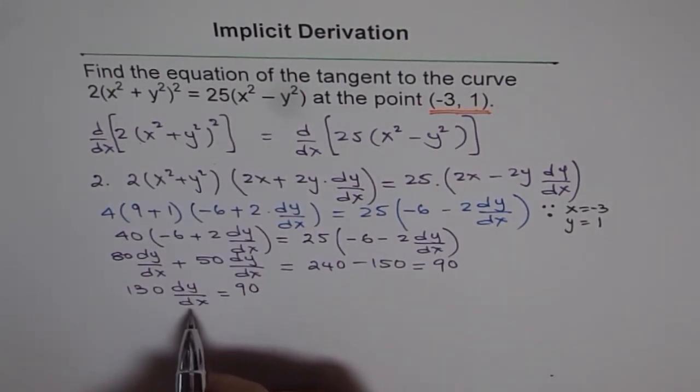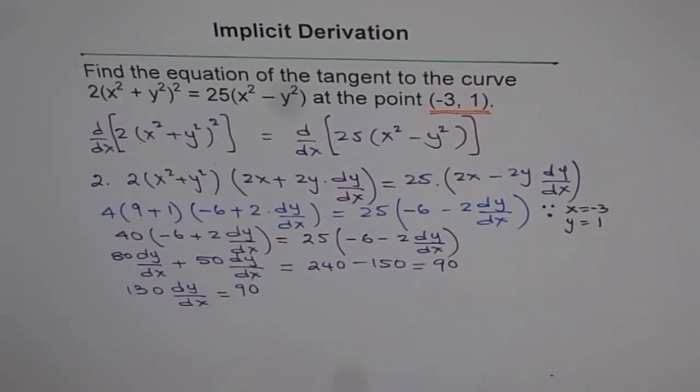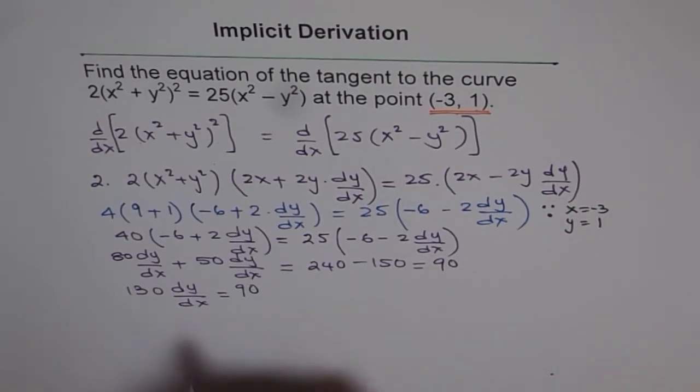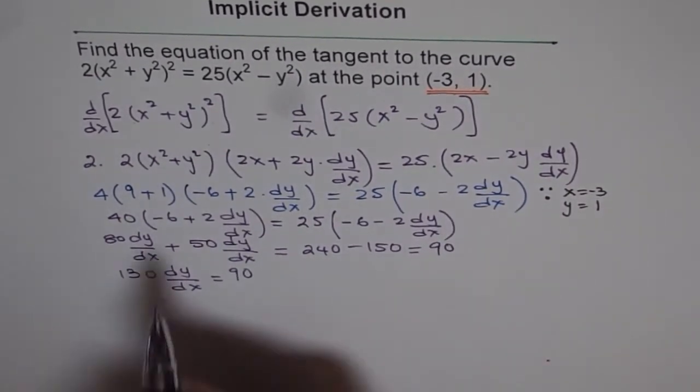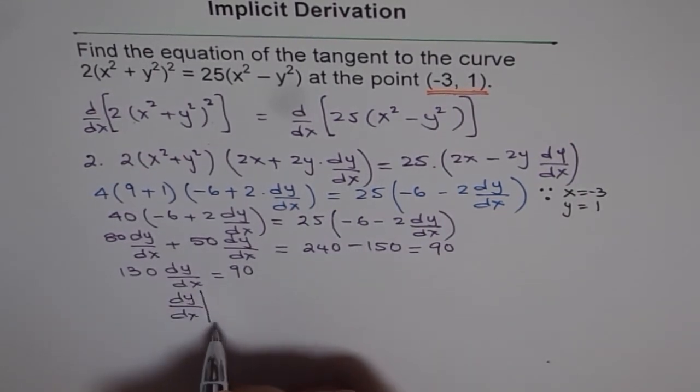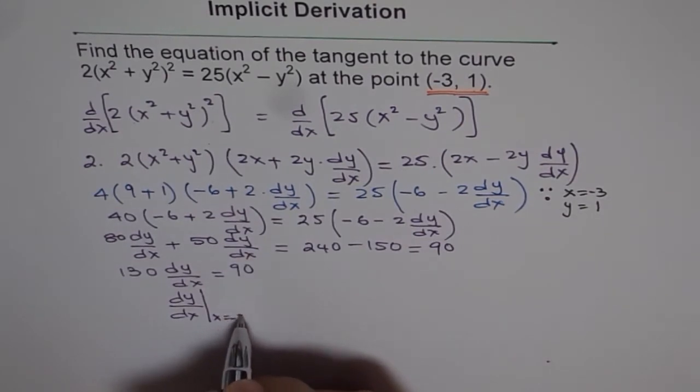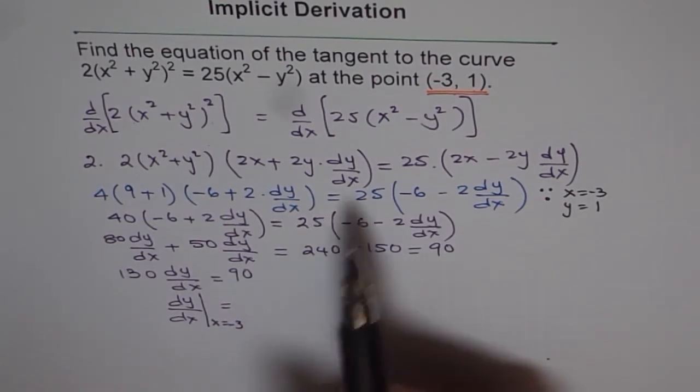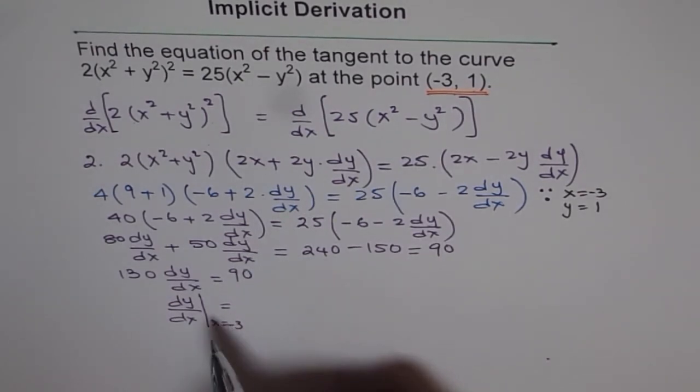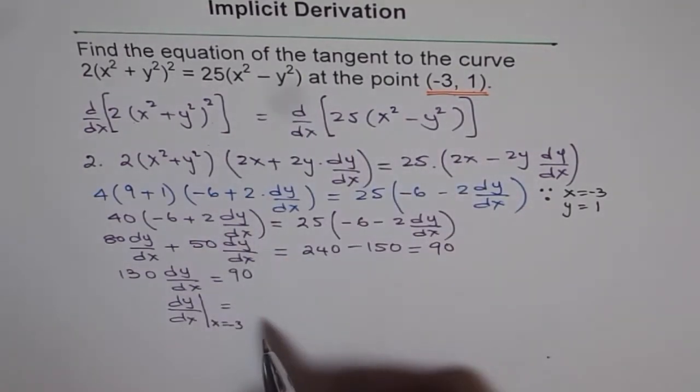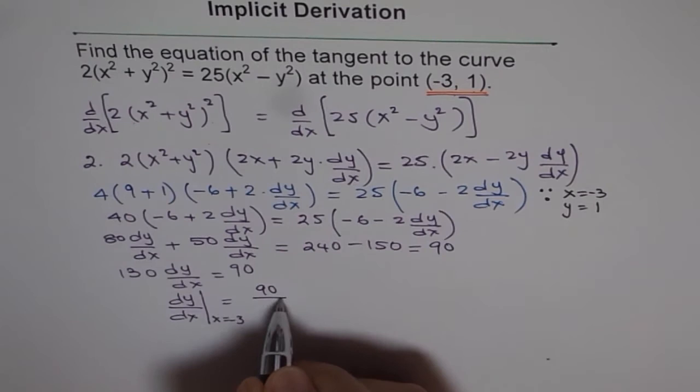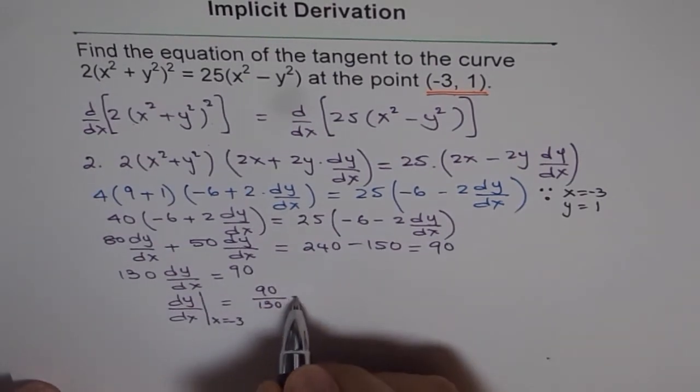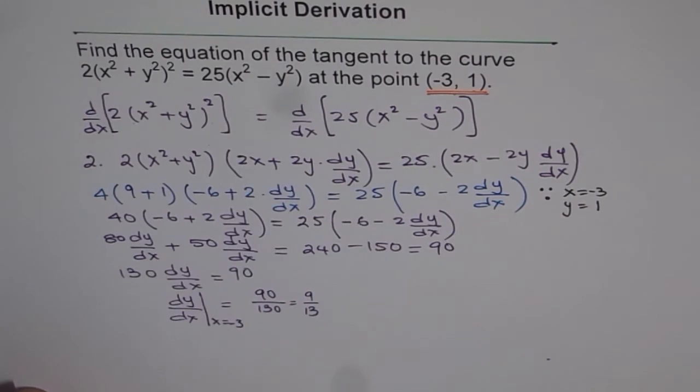Now this means dy/dx is 90 over 130. So we have dy/dx, and this is at x equals -3, because we substituted x equals -3. This is the slope of our function at the point (-3, 1), the slope of the tangent line at (-3, 1) on the given function. So we have this as 90/130, or 9/13. So let me write this as 9/13 for the time being. Now this is one part, so we at least got the slope.